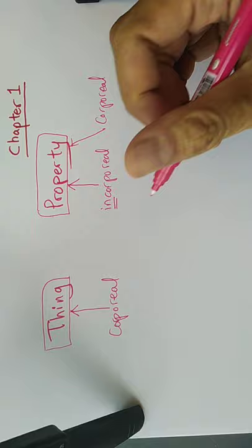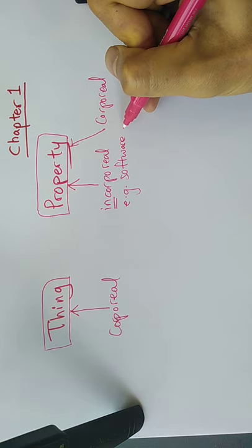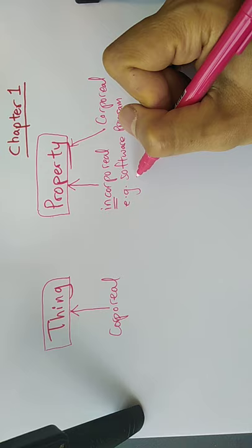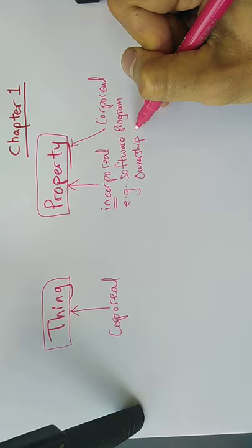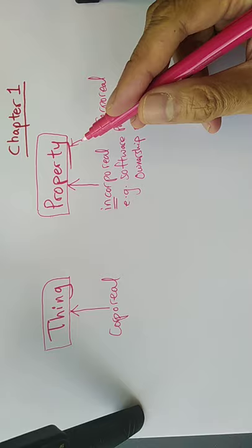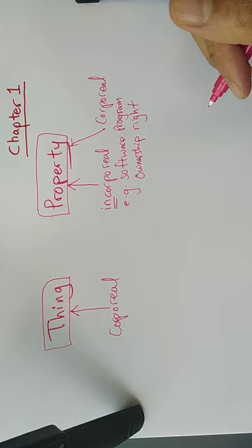And we use 'property' to refer to things that are both corporeal and incorporeal — like a software program, or ownership rights: the right of the owner. That right is also incorporeal, and therefore it is a property.